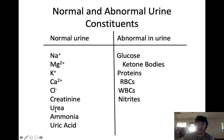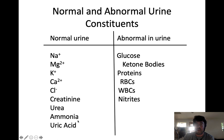Urea is the byproduct of the breakdown of proteins, as is ammonia. Uric acid is the byproduct of the breakdown of nucleic acids. If you leave urine in the toilet for too long, the urine rings that build up are largely made of uric acid. Uric acid is also one of those things that if you get really dehydrated, its concentration goes up and it can crystallize in the kidney, forming things like kidney stones. These are all totally normal to find in urine.